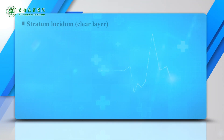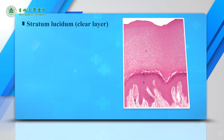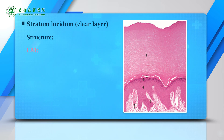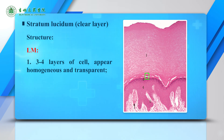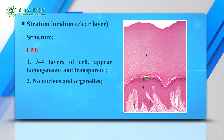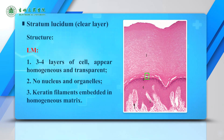The next layer, stratum lucidum, contains three to four layers of cells that appear homogeneous, transparent, and eosinophilic. There is no nucleus or organelles. Keratin filaments are embedded in a homogeneous matrix.